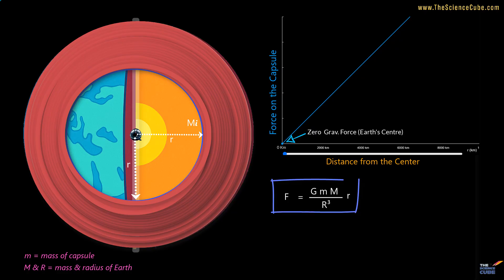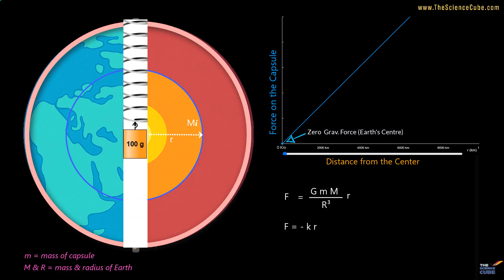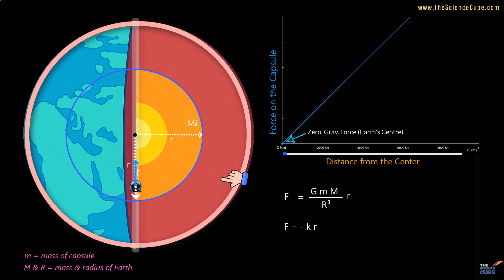Let us now write this equation in this form, where K is a constant replacing this cluster of constants. Also, we have put a minus sign here to indicate that F is pointing in a direction opposite R. This equation is in the form of Hooke's Law. That means the capsule will oscillate quite like a block attached to a spring, with the mean position at Earth's center. When the capsule reaches the Earth's center, it would continue to travel towards the North Pole, and then back again, the way any simple harmonic motion would happen.